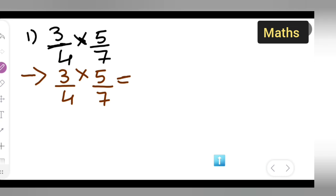I can just multiply 3 times 5 over 4 times 7. Since nothing is getting cancelled, we cannot cancel anything here.